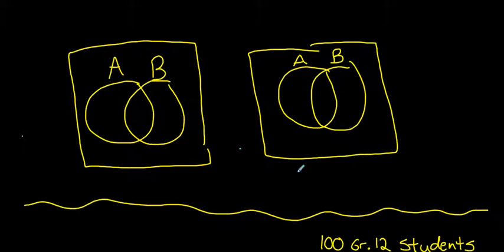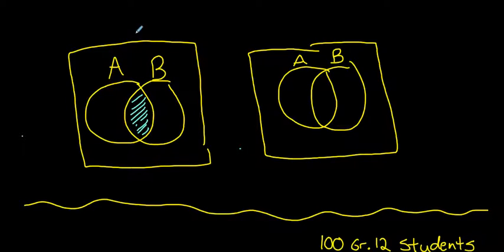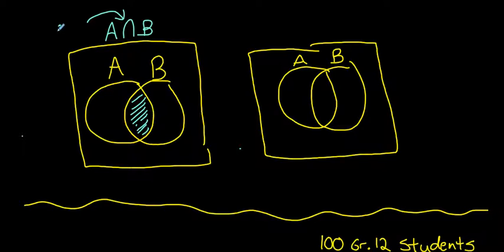We have two sets within a sample space: set A and set B. If we wanted to look at just the intersection of the two sets — the overlap of set A and set B — we'd represent that section using the notation A ∩ B. This upside-down U symbol means 'and'; it is the intersection of set A and set B.